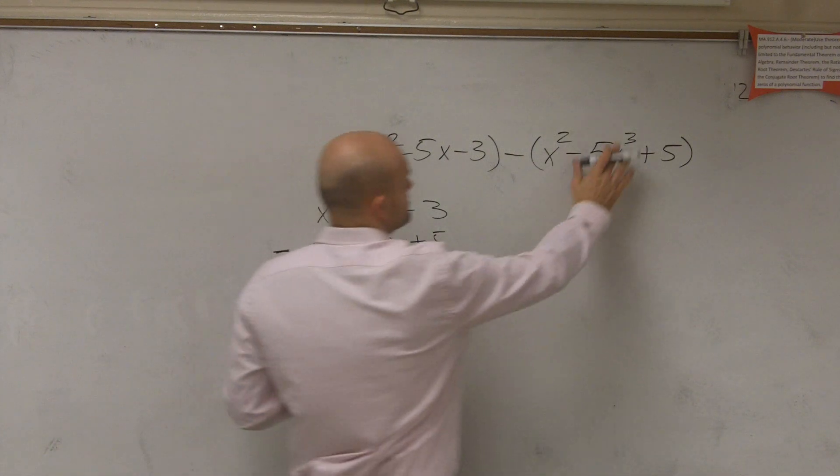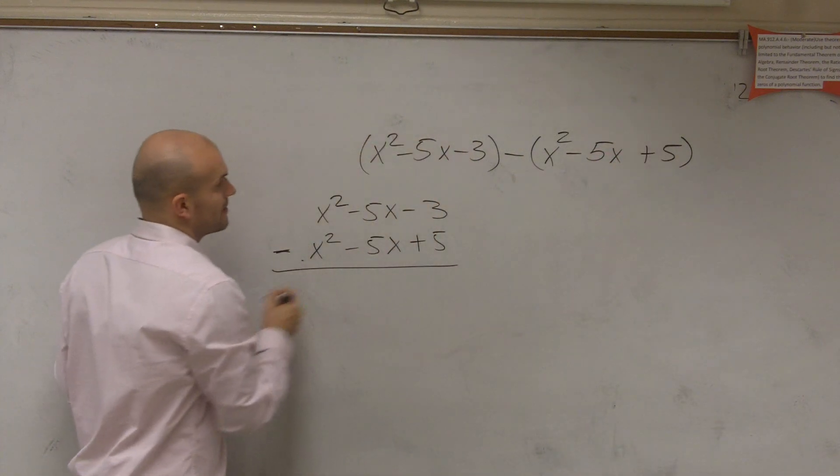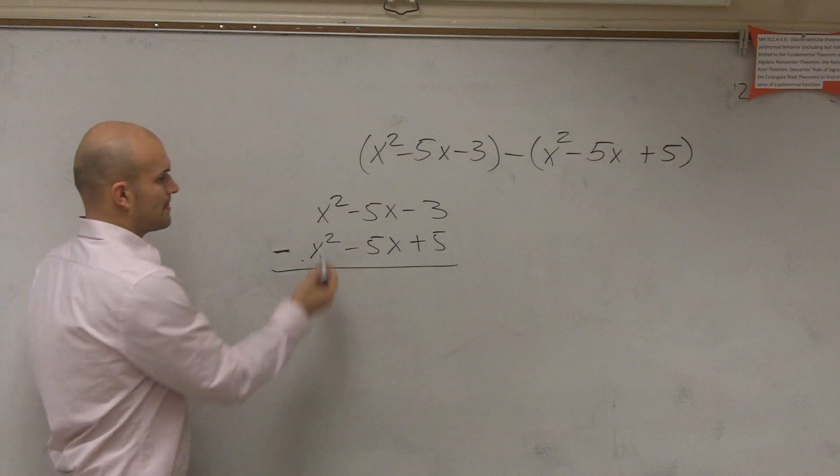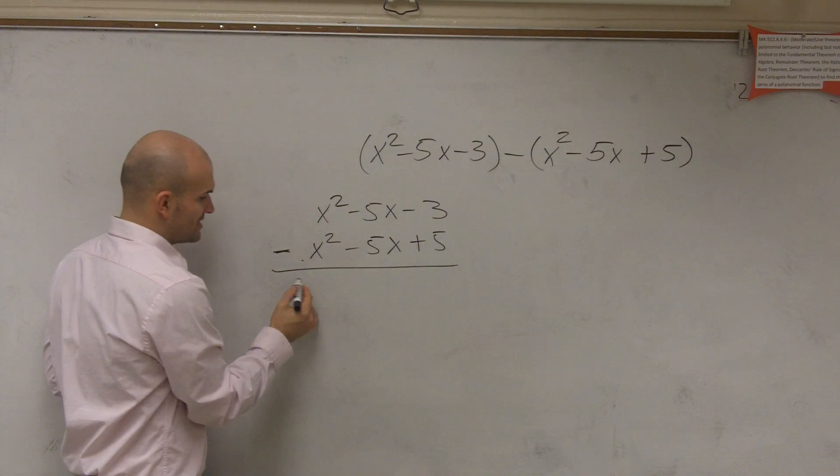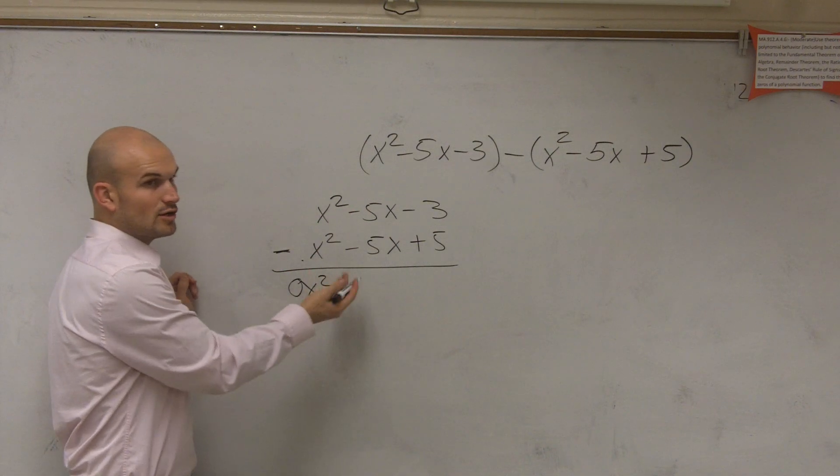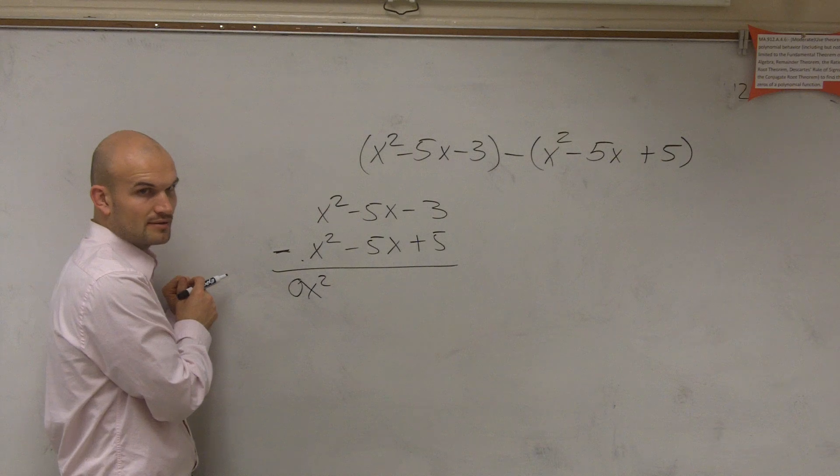Oh, that's not supposed to be a 3. I'm sorry, that's supposed to be an x, sorry. OK, so x squared minus x squared is 0x squared. 0 times x squared is just going to leave us with 0, right?